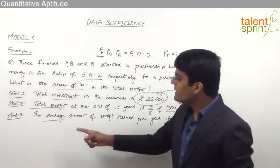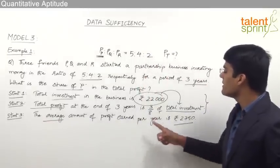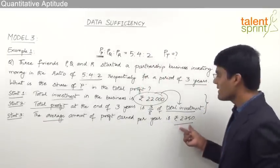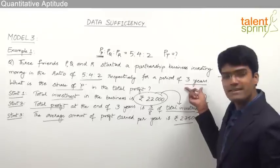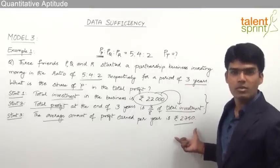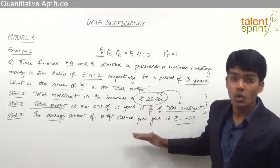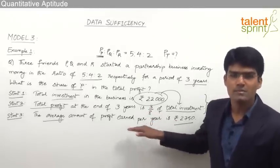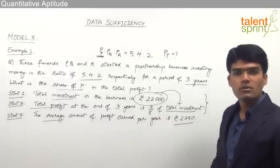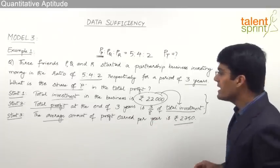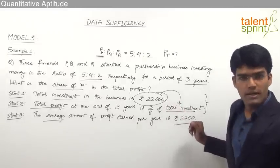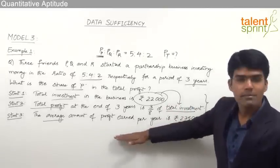Statement 3 says the average profit per year is rupees 2,750. That means profit for one year is 2,750, so profit for 3 years is 2,750 × 3, giving us the total profit directly. So statement 3 alone gives us the total profit, and from that P's share can be found. The answer can be obtained either by combining statements 1 and 2, or by statement 3 alone.